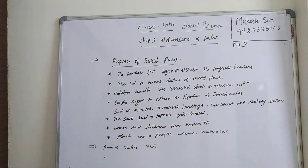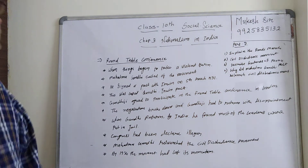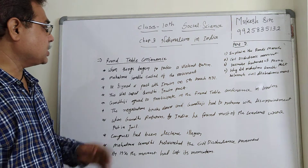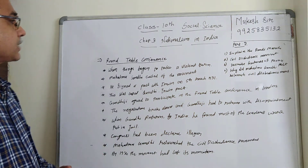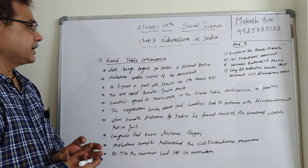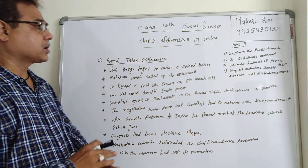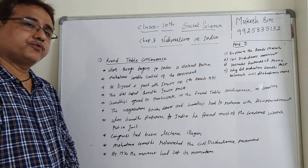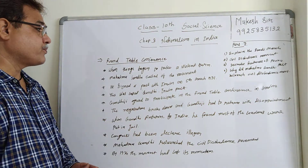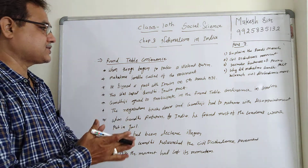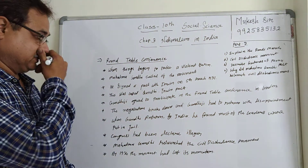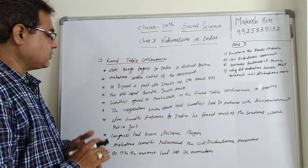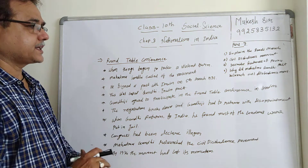Next point: Round Table Conference. When things began to take a violent turn, Mahatma Gandhi called off the movement. He signed a pact with Irwin on 5th March 1931, known as the Gandhi-Irwin Pact. Gandhi ji agreed to participate in the Round Table Conference in London.